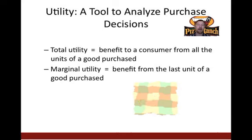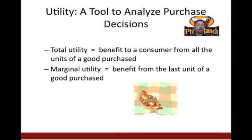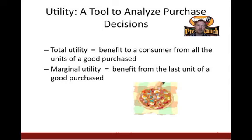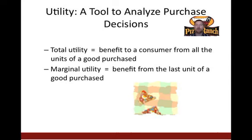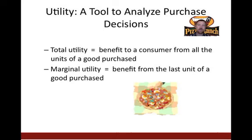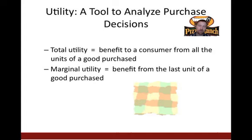Total utility is the benefit to us from all of the units of a good purchased. So if I ate a whole pizza at Pizza Ranch, my total satisfaction includes all those slices. Marginal utility, however, is the benefit of each individual slice. So if I had one slice of pizza, maybe it gives me 10 utils of satisfaction. Then I eat another slice — maybe that's 9 utils. By the seventh or eighth slice, that's not tasting very good anymore; my satisfaction is down to maybe 2 utils. If I go for a tenth slice, it might actually be negative satisfaction.